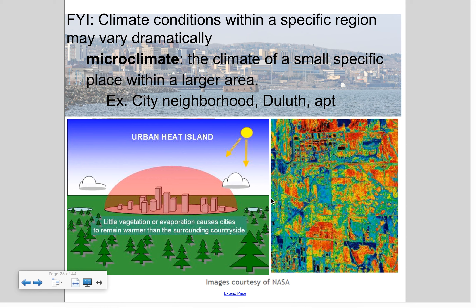Climate conditions can vary dramatically even within a region. Duluth, which sits on Lake Superior, gets significantly more snowfall — several inches higher — than areas just outside the city because of the lake effect. We can classify these as microclimates — the climate of a very small, specific place within a larger area. We also see this in large cities with urban heat islands, where little vegetation and lots of asphalt absorb heat and retain it into the night.